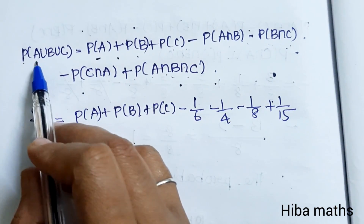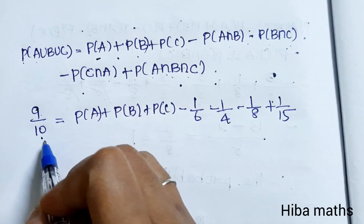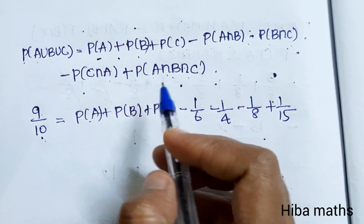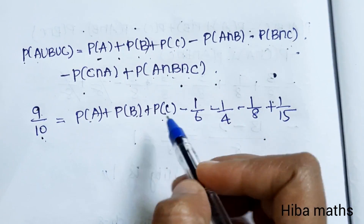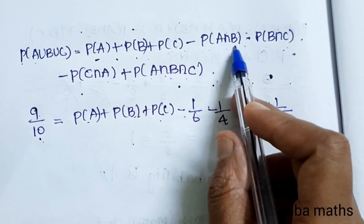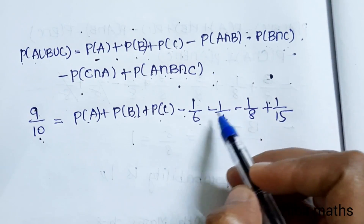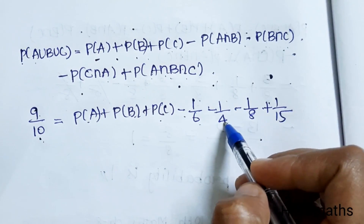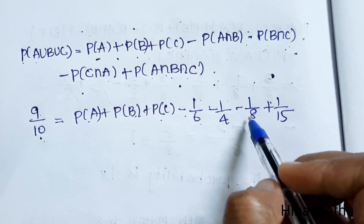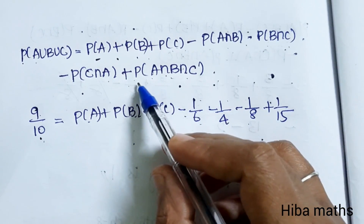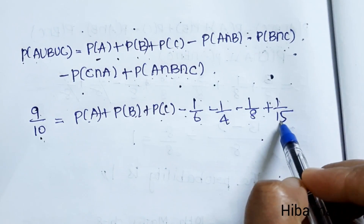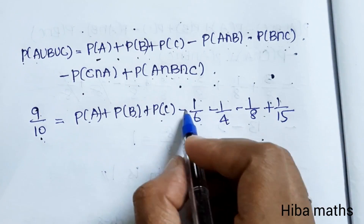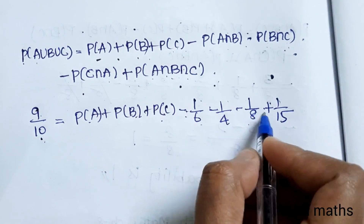So P(A∪B∪C) = 9/10. Applying the inclusion-exclusion formula: P(A) + P(B) + P(C) minus P(A∩B) which is 1/6, minus P(B∩C) which is 1/4, minus P(C∩A) which is 1/8, plus P(A∩B∩C) which is 1/15.